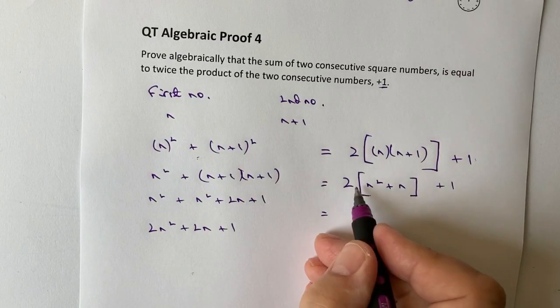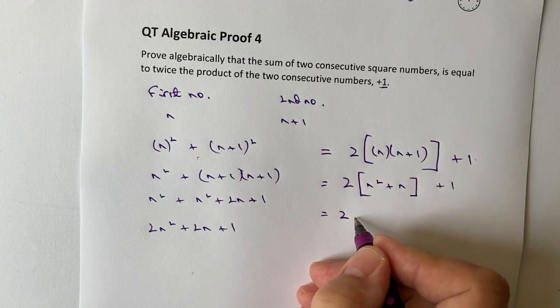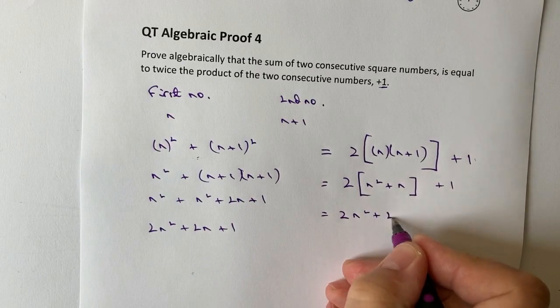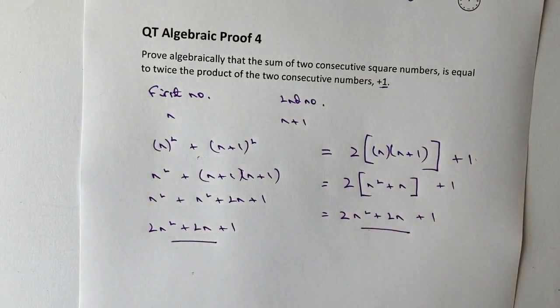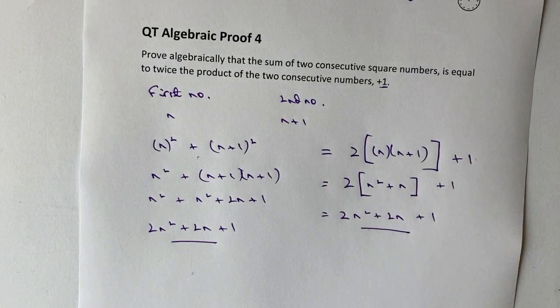Hopefully you can see that when I multiply this out, then I'm going to get two n squared plus two n plus one. So basically both expressions are exactly the same.